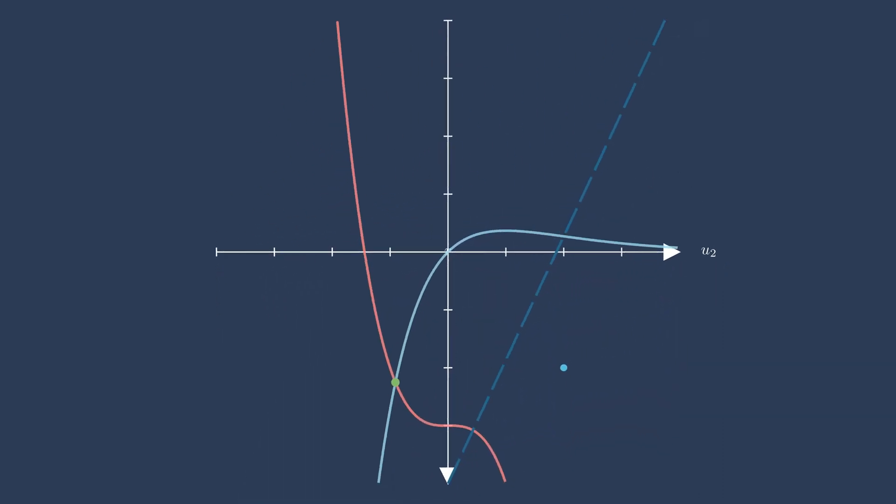In the 1D case we looked at before, this would give us the updated guess and we'd repeat. But here, the linear approximation is zero along a line, not a point. So how do we know where along that line to choose? Well, there's a second residual that we haven't used yet.